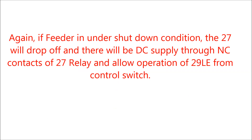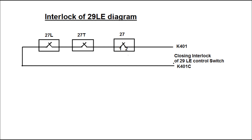When a feeder is in shutdown condition, the CBT remains in an uncharged condition. Therefore, the relay drops out and the NC contact returns to the NC position, again allowing operation of 29LE from the control switch. The detailed interlocking arrangement for 29LE is shown in this diagram. Apart from relay contact 27, we also take the contact of 27T — that is, the transfer bus side isolator — and the line isolator, for safety purposes.